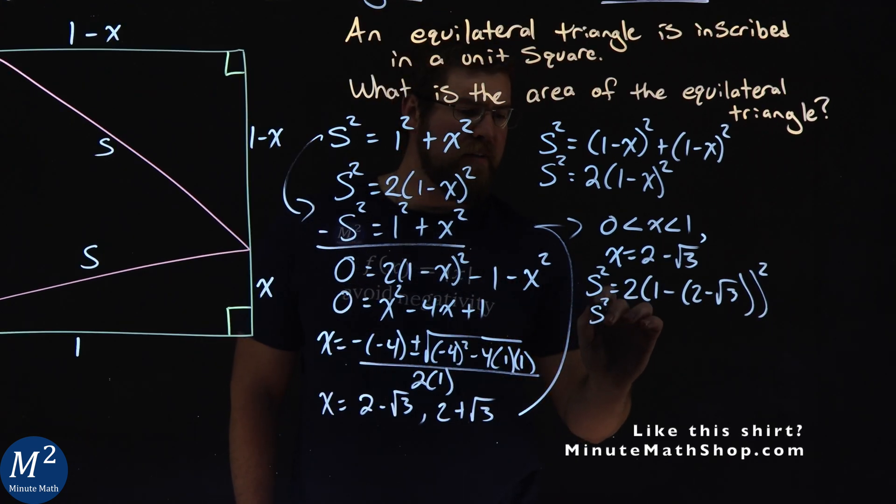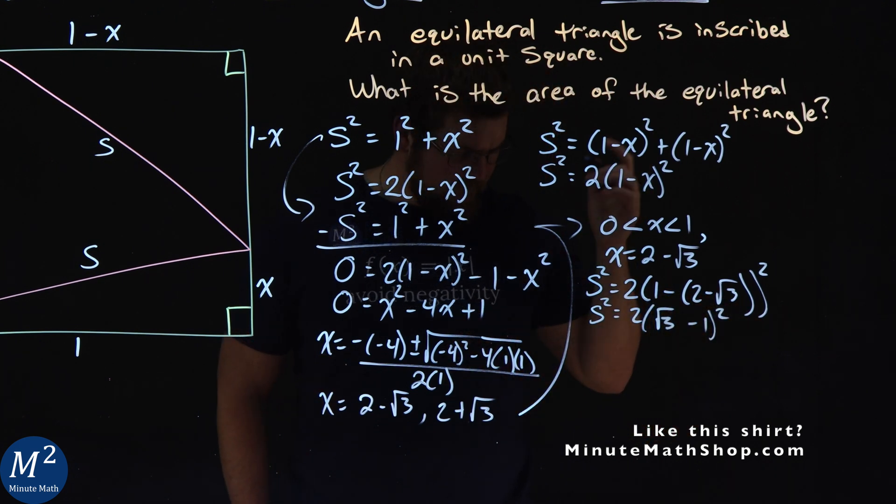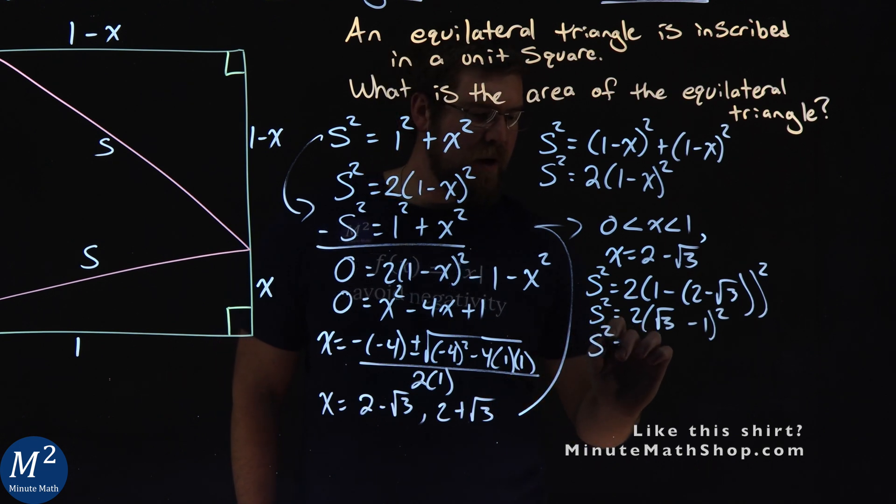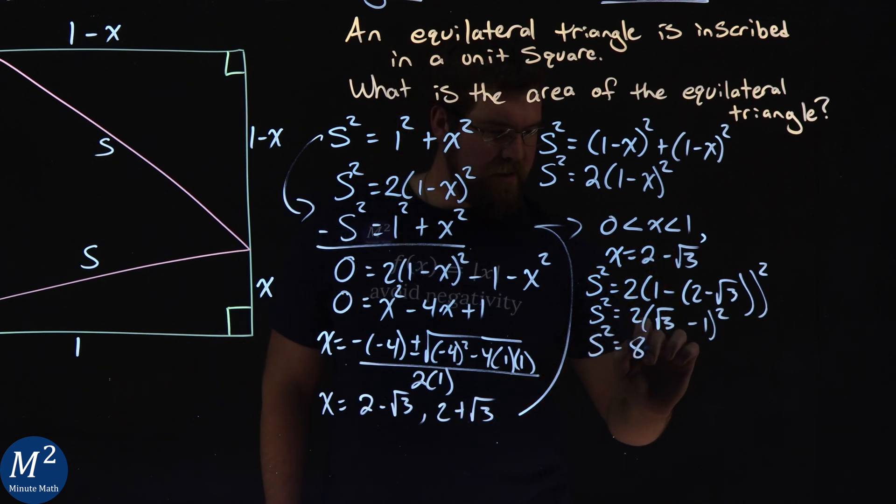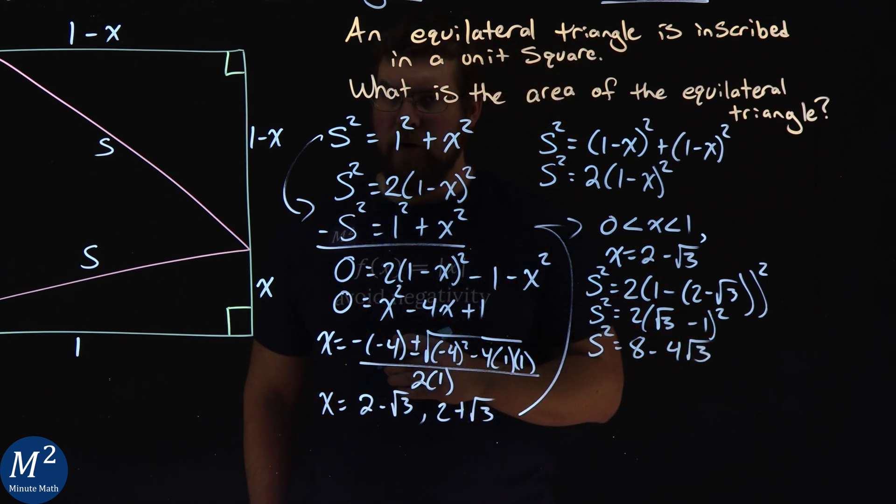This simplifies to be side squared is equal to 2 times (square root of 3 minus 1) all squared. And from there, that simplifies to be S squared is equal to 8 minus 4 square root of 3. And I did the hard work there for you.